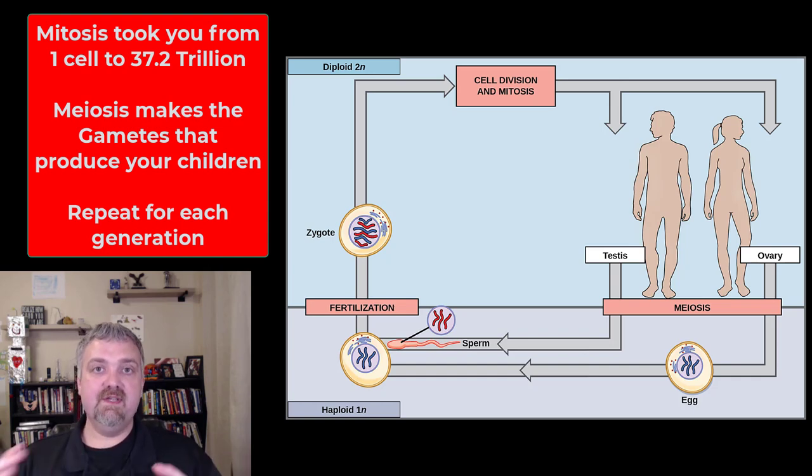16. You get the point. So cell division and mitosis turns you into a baby that had a few trillion cells and you continue to grow and to develop until you're an adult that's made of somewhere around 37.2 trillion cells. But once you're these 37.2 trillion cells, you're not done.